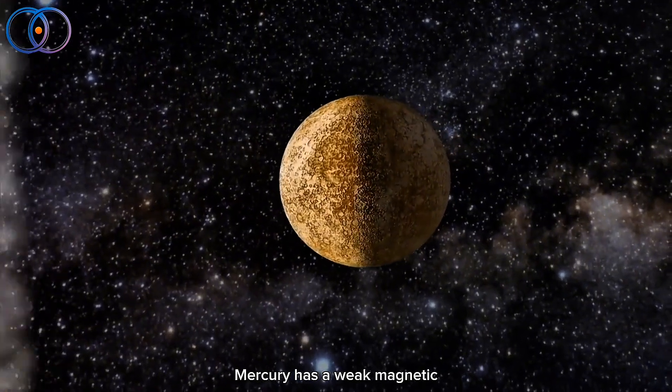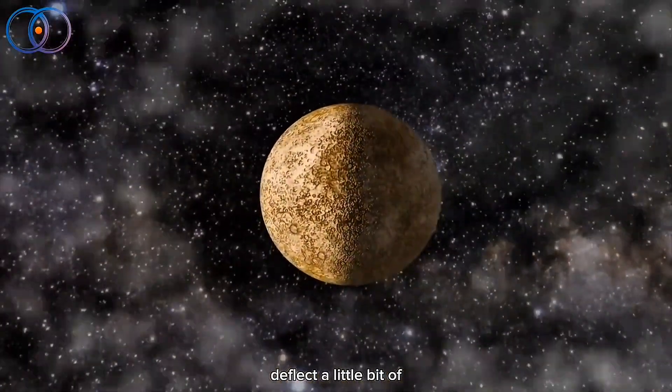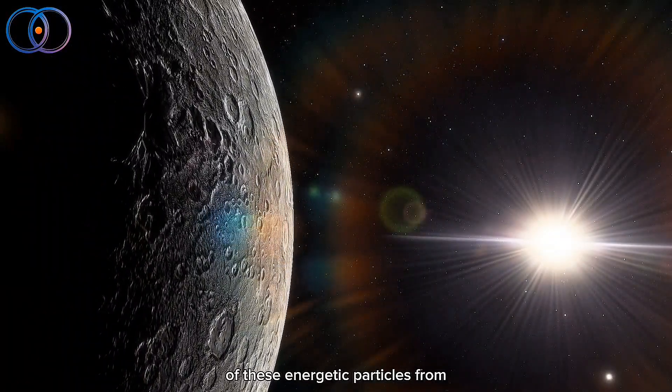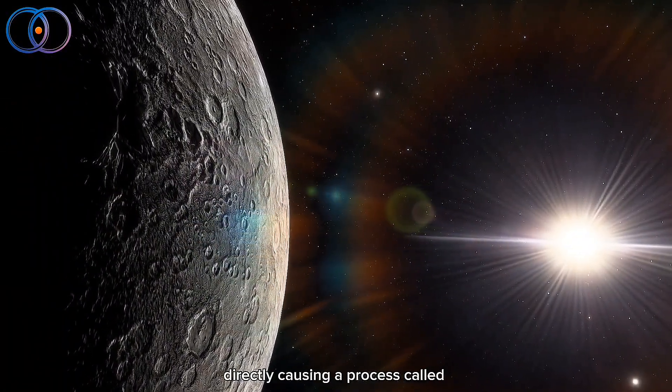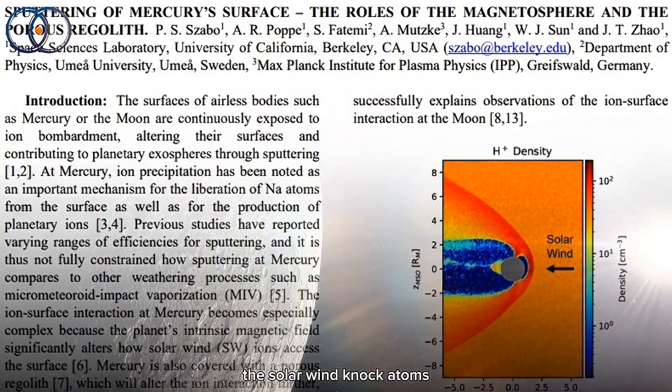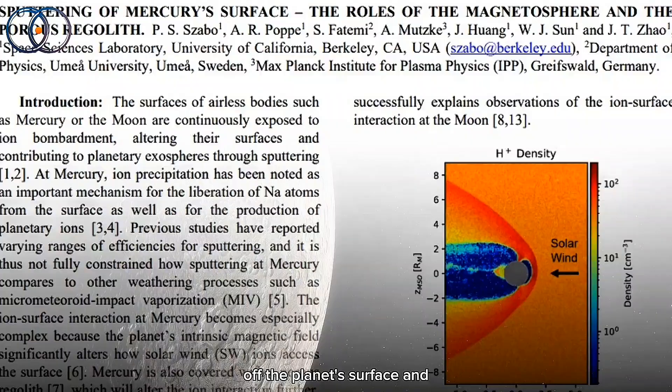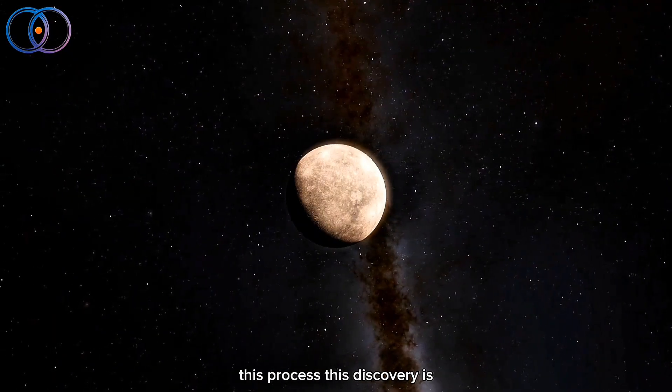Mercury has a weak magnetic field, just strong enough to deflect a little bit of the solar wind. But most of these energetic particles from the sun hit Mercury's surface directly, causing a process called sputtering. In sputtering, particles from the solar wind knock atoms off the planet's surface, and sodium is especially vulnerable to this process.